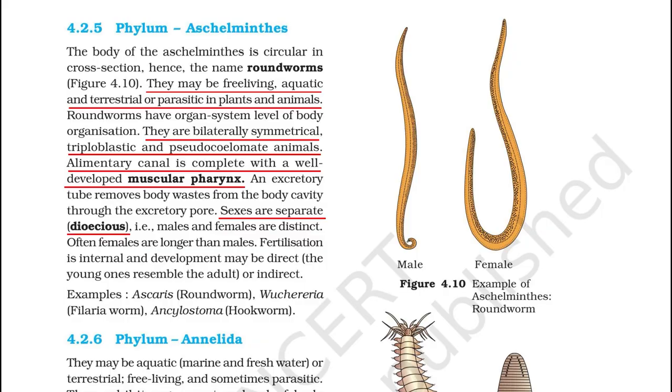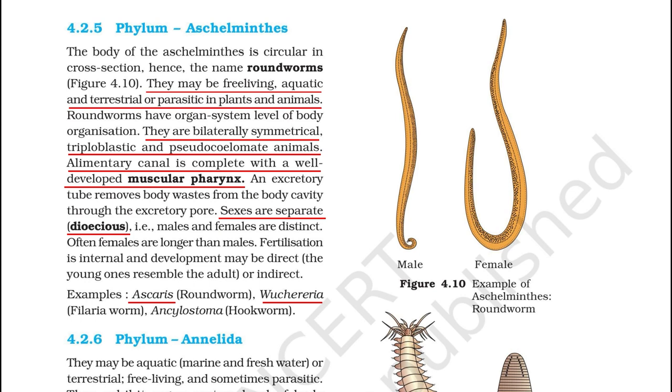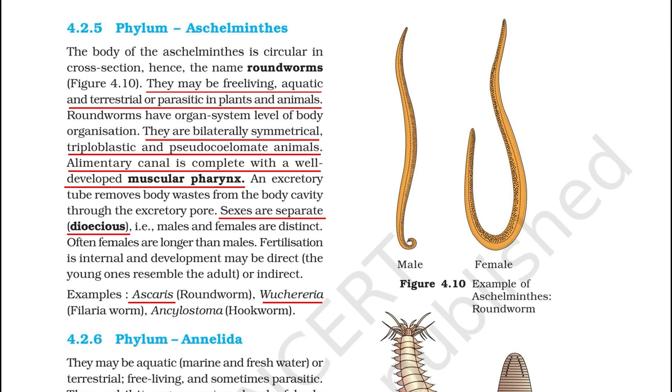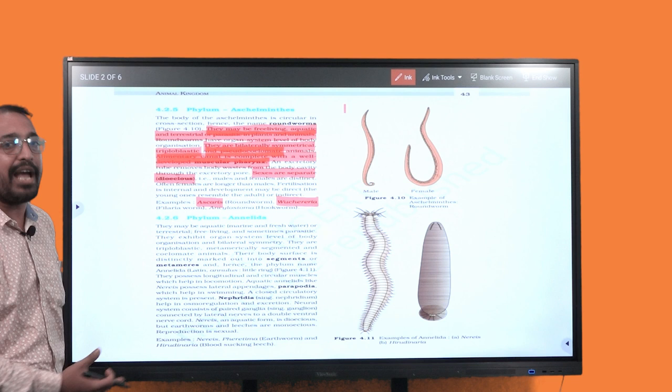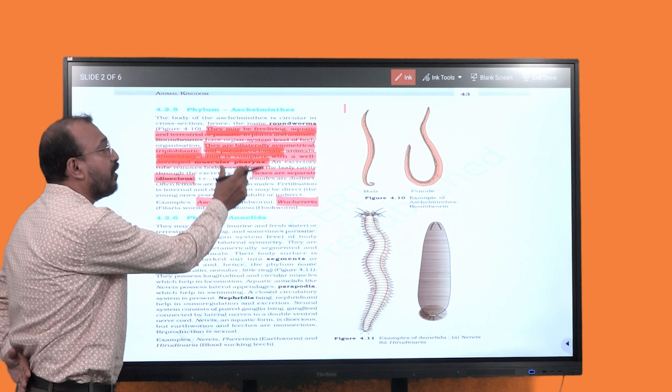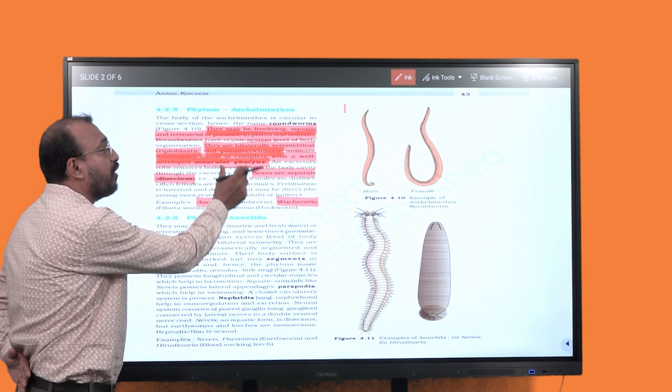You can see what examples are there. This is the example of roundworm Ascaris, the example of Wuchereria. These are examples of animal parasites. But what about plant parasites? Where is it?